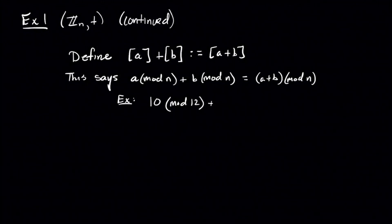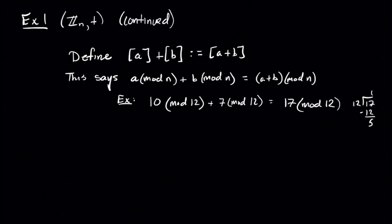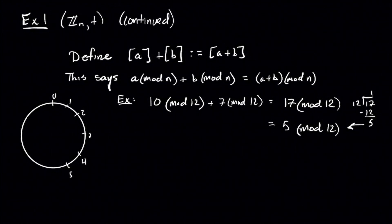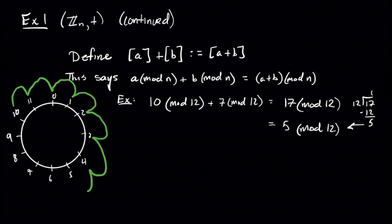For example, if we do 10 mod 12 plus 7 mod 12, just do 10 plus 7, divide by 12, and the remainder is your answer. We can visualize this by drawing a clock and treating clockwise as the positive direction, with 0 where 12 usually is. Now if you start at 10 and jump 7 times in the positive direction, you end up at 5.